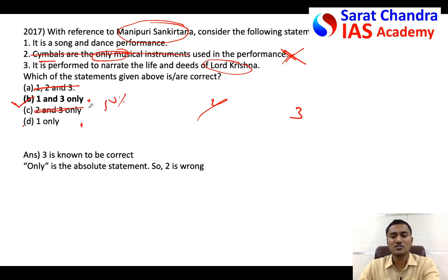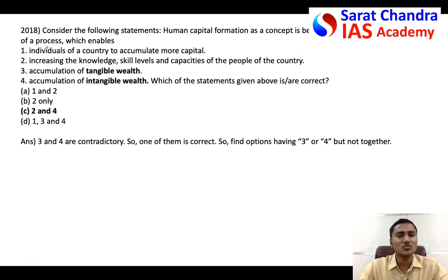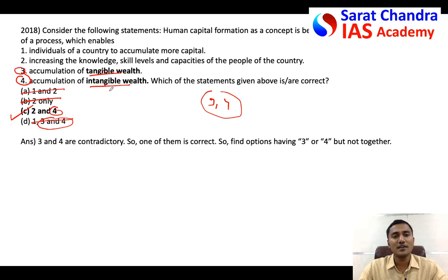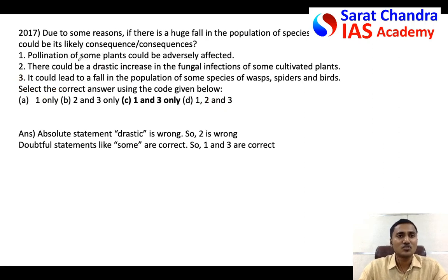Similarly, when two statements are contrary to each other — for example, 'accumulation of tangible wealth' versus 'accumulation of intangible wealth' — they are opposite, so one shall be wrong and one shall be correct. Both three and four together cannot be in the answer. Definitely in three and four, at least one should be there. Looking at the options: where three is not there it is wrong, where four is there it is correct. That's how you mark the answer when 'all statements' options come.